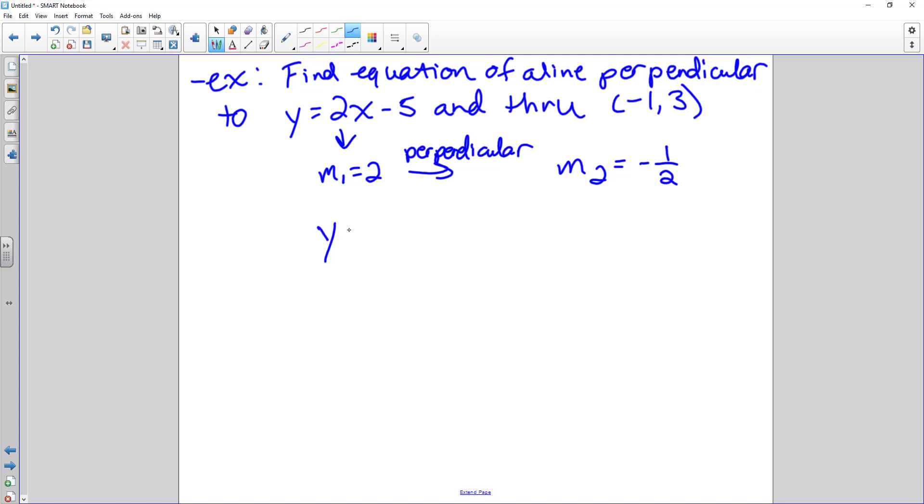So now I can use my point slope formula. Y minus, so now I'm going up to the point that I know goes through the equation. x one, y one. Y minus three equals negative one half. X minus negative one. So y minus three equals negative one half x. Minus a negative is going to turn into positive one times negative one half. So y one half is going to be minus one half. Add three to both sides to get my y alone, so it's in slope intercept form. And I get negative one half x.